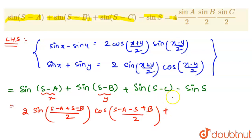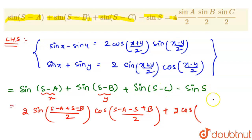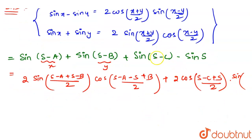For the remaining terms, sin(S minus C) minus sin S, we use the first identity. This gives us 2 cos((S minus C plus S)/2) into sin((S minus C minus S)/2), which simplifies to 2 cos((2S minus C)/2) into sin(minus C/2).